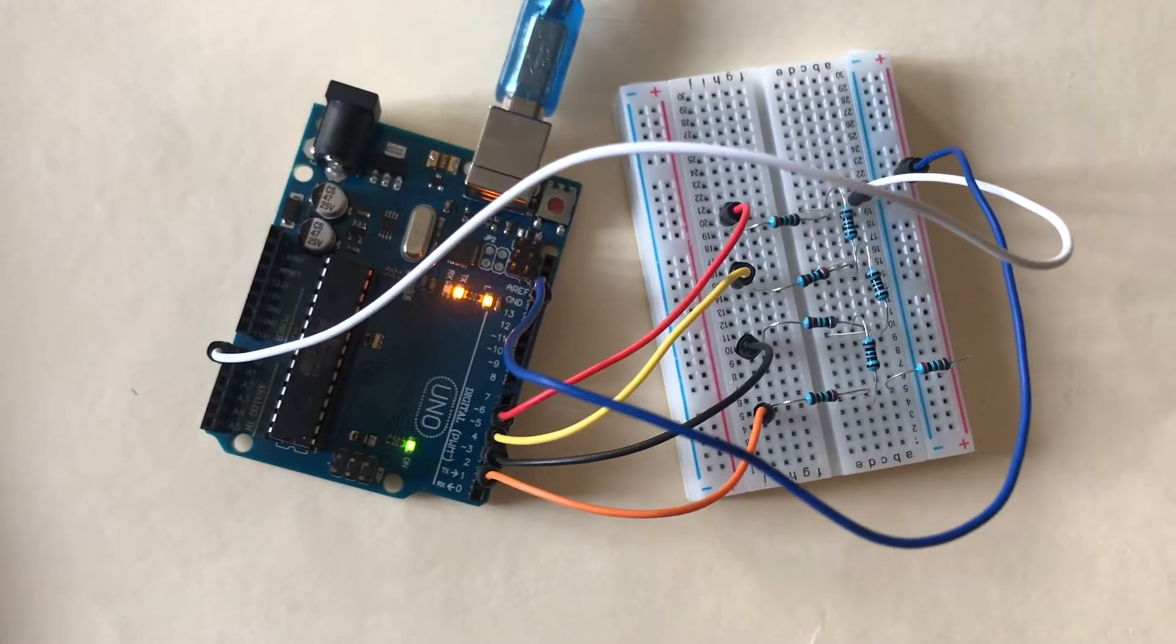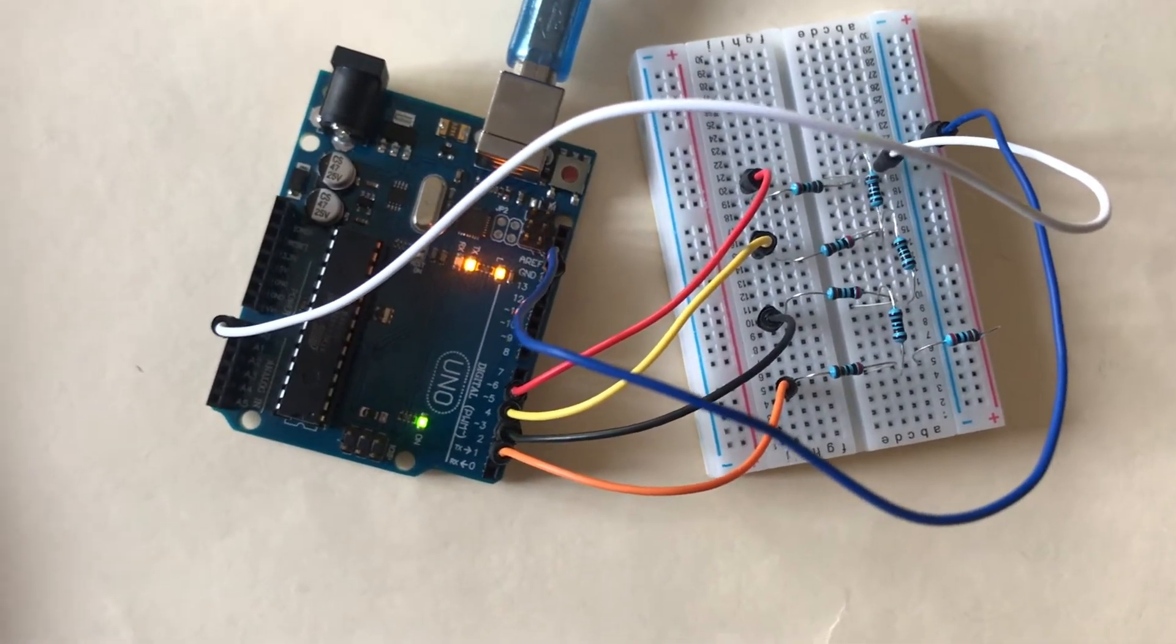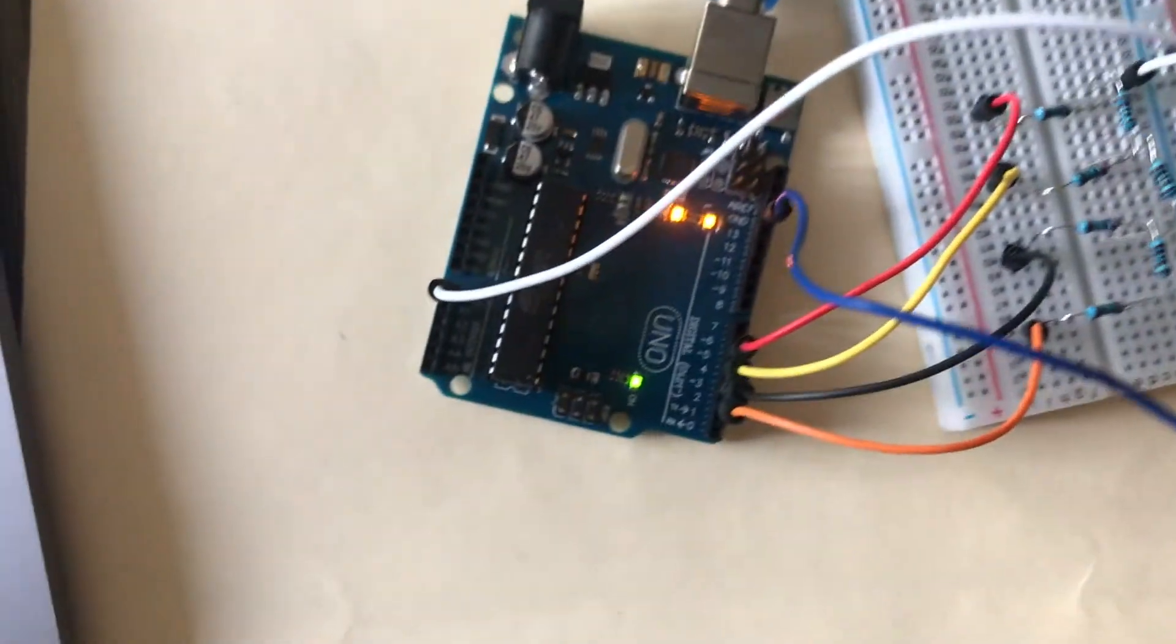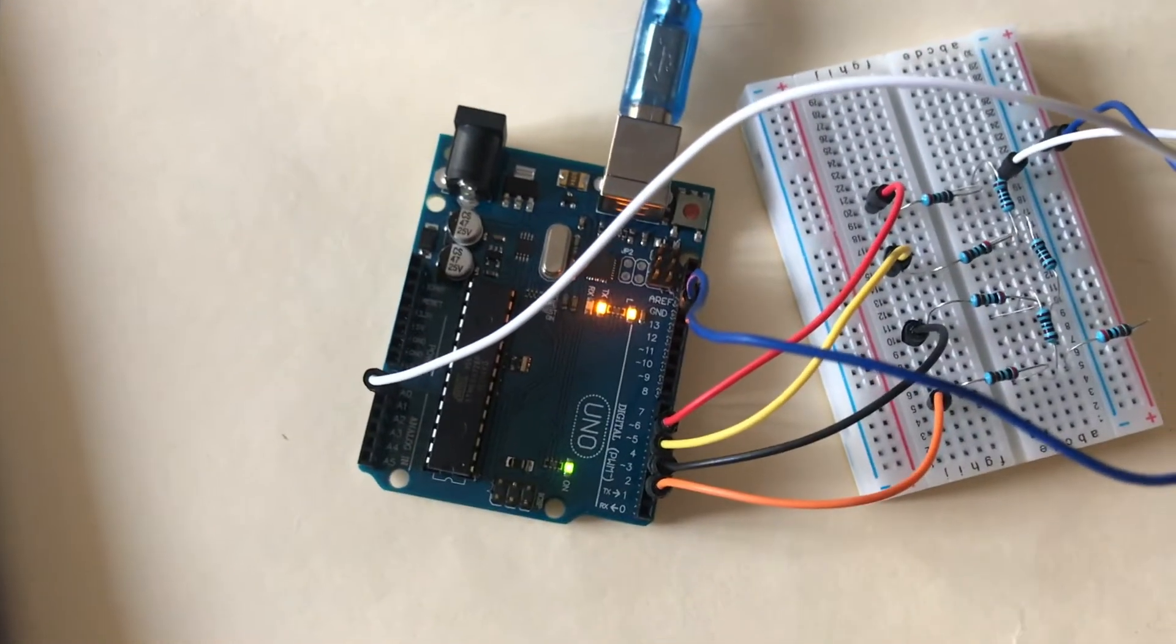So this is an R2R ladder circuit, which also works as a digital to analog converter. As you can see the resistor configuration, it looks a lot like a ladder.